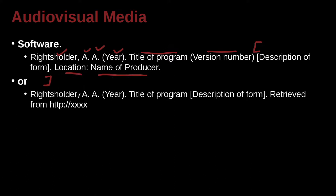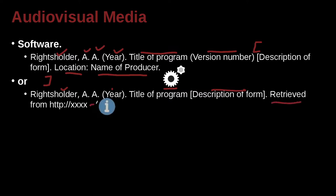Another way you could do this is to have the name of the maker, the producer, or someone related to the owner, the year, the title of the program, the description of the program — what is it — and then where did you get it online, because it could be a web program, or it could be something used online or downloaded from online.